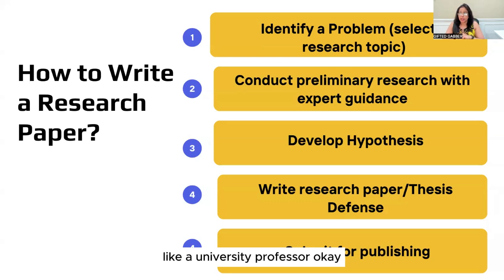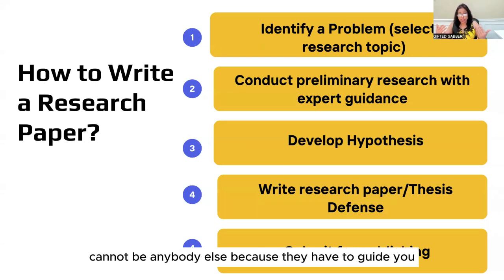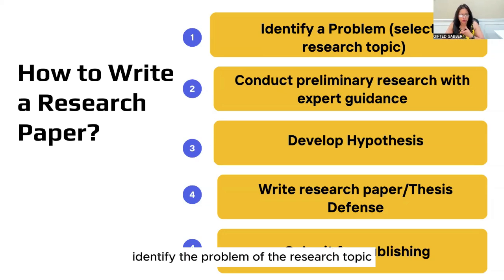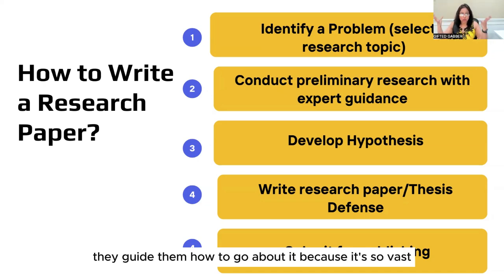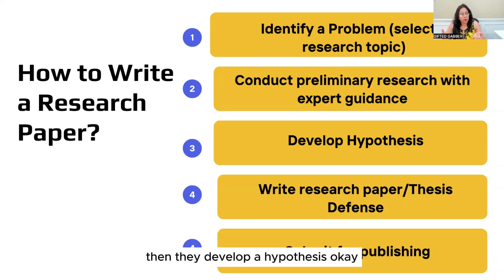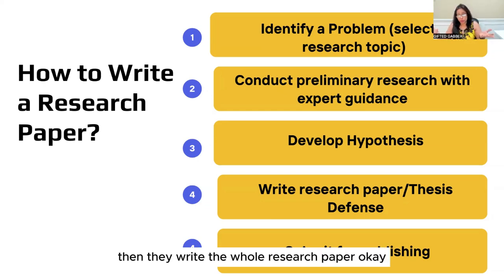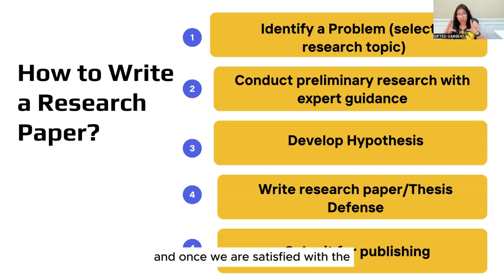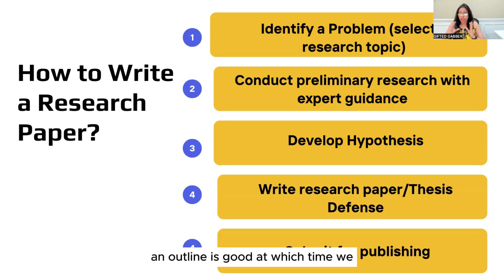That's why you have to work with an expert like a university professor - they guide you in trying to solve the problem you want to address. The number one step is to identify the problem or research topic. Then comes preliminary research with expert guidance. They develop a hypothesis, which is their initial answer to the problem. Then they write the whole research paper, the abstract comes in, and we follow a whole process - tweaking it until we're satisfied, then submitting for publishing.